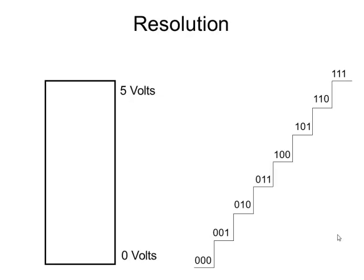If this were a 4-bit ADC, the resolution would be — well, with 4 bits I can represent 16 steps, so it would be 5 volts divided by 16, or 0.3125 volts. If it were an 8-bit ADC, an 8-bit ADC can produce any one of 256 different numbers. So I would take my 5 volts, divide by 256, and I would get a resolution of 0.0196 volts, or about 20 millivolts.